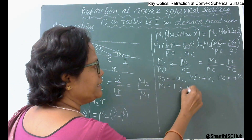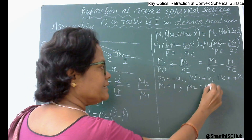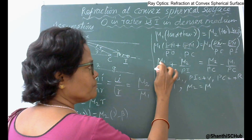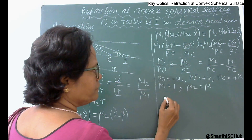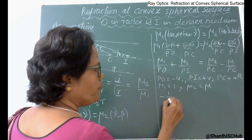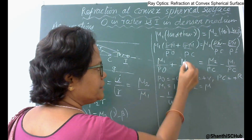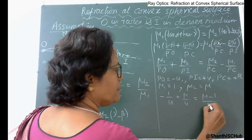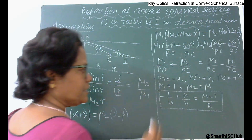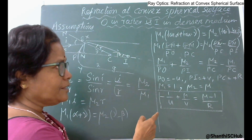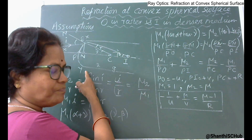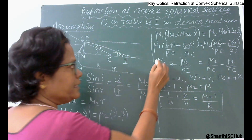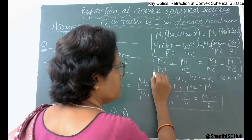For air medium, the absolute refractive index is 1 (mu1 = 1); for glass medium it is mu (mu2 = mu). Substituting these values along with the Cartesian sign convention, the equation becomes: −1/u + mu/v = (mu − 1)/R. This is the equation for refraction through a convex refracting surface when the object is in the rarer medium and the real image is formed in the denser medium.